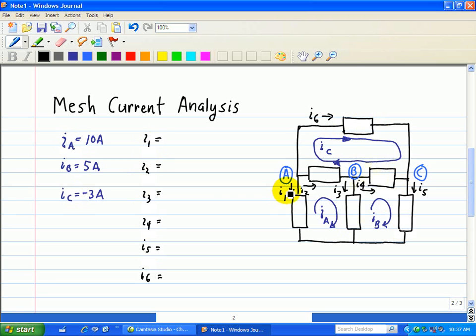Let's take a look at I1 first. We see it's going down. But since we choose our reference to be clockwise direction, we see that IA goes against I1. So we have minus IA, and therefore I1 is equal to minus 10 amps. So I1 equals minus IA, which is opposite in this reference direction.